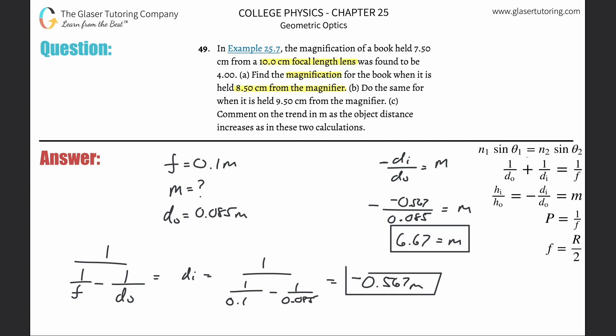Now it says do the same when it is held 9.5 centimeters from the magnifier. So it's going to be the same exact calculations here, except this now turns into 0.095. This would become 0.095.